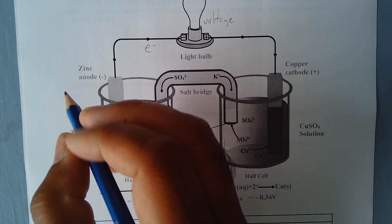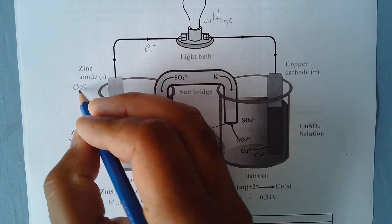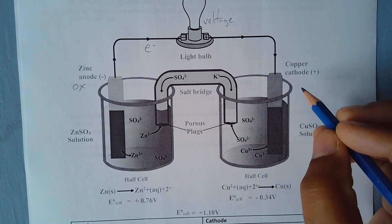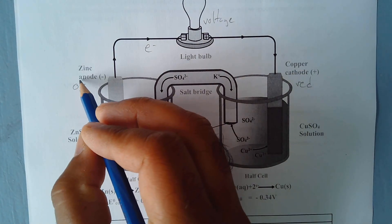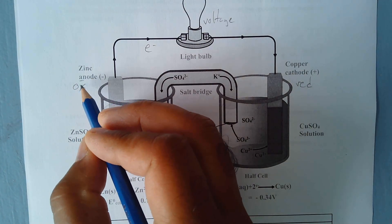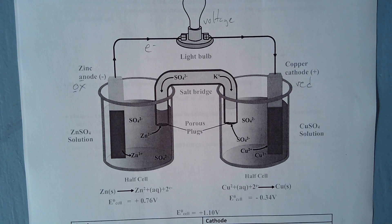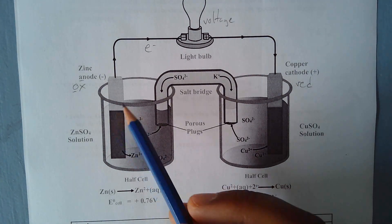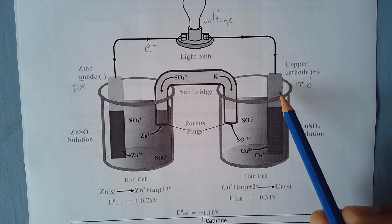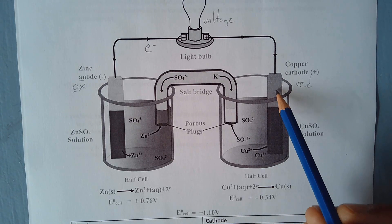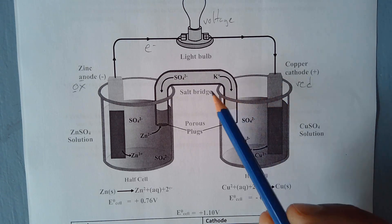Your anode is always the site of oxidation and your cathode is the site of reduction. One way to remember is: anode and oxidation both start with a vowel, so that way you don't mix the two up. These are your electrodes — the two metallic pieces.